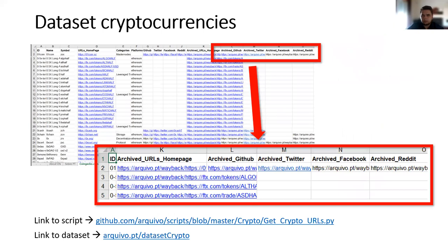In addition to the columns from each project, the dataset also has a column with the archive version. You can check the script used to extract the information in GitHub, and you can also download the dataset at archive.pt/datasetcrypto.